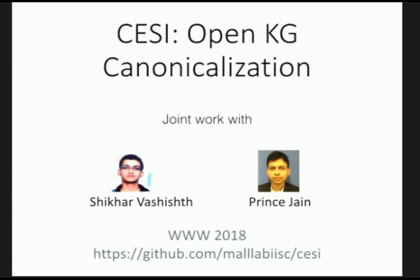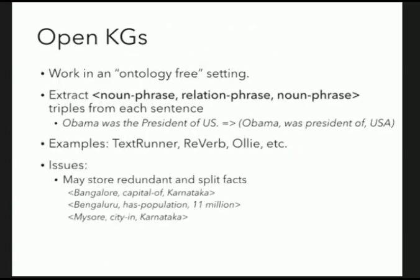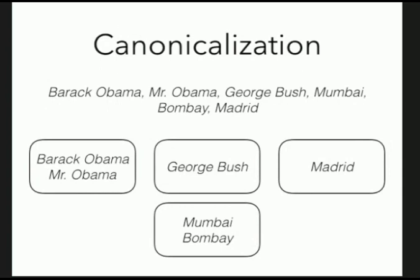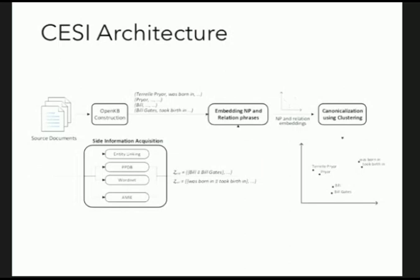The second problem is canonicalization — the 'Barack Obama versus Mr. Obama' problem. This was presented at WWW 2018, and the source code is available. The system is called CESI — Canonicalization using Embeddings and Side Information — joint work with PhD student Shikha and former master's student Prince. Given triples like 'Bangalore capital of Karnataka' and 'Bangaluru has population 11 million,' we want to determine that 'Bangalore' and 'Bangaluru' are the same entity.